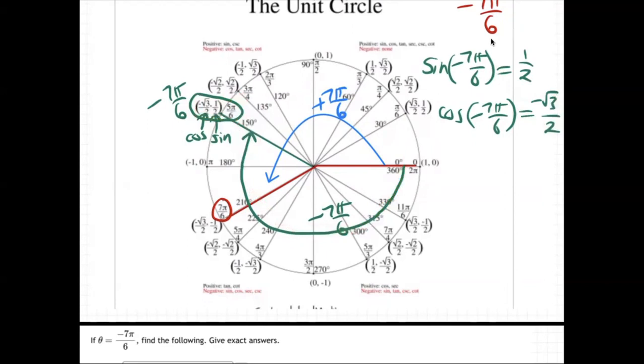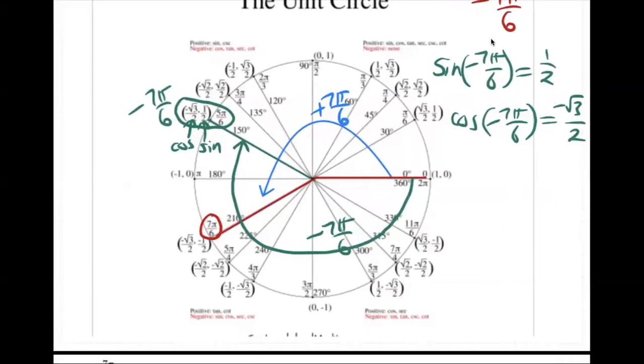The other way is you could convert. So I think that's the best way. The other way is you could just convert your negative angle to a positive. You could just say, okay, I'm going to take my negative 7π over 6, and I'm just going to subtract it from 2π. I'm just going to subtract it from 2π.